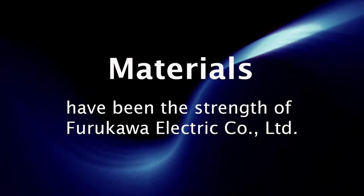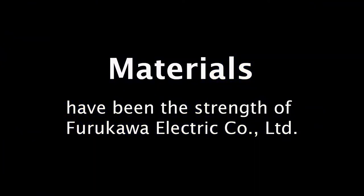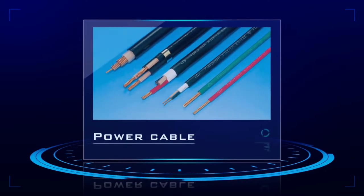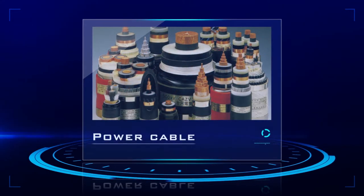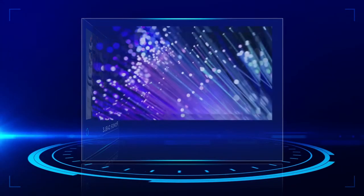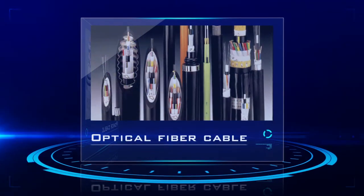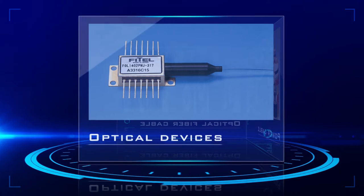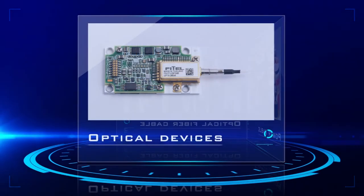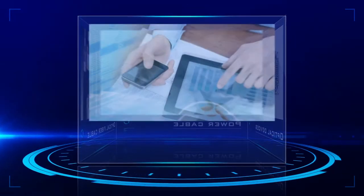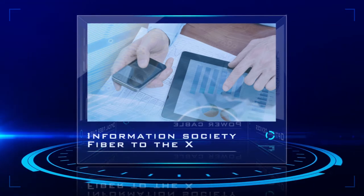For over a century, materials have been the strength of Furukawa Electric Company Limited. One of our first areas of operation was in electrical wire. From there, we leaped forward to achieve the world's first practical application of optical fiber cable, firmly supporting the new IT society and the push to deliver fiber to the X with leading edge technology.